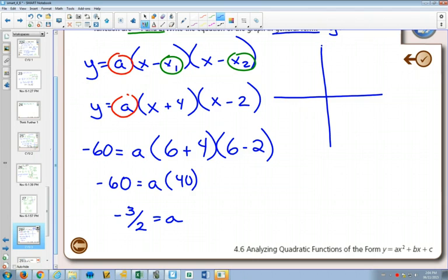So now we know that our equation in factored form - we figured out our a value is -3/2 - is y = -3/2(x + 4)(x - 2). The question asked us to write our final equation in general form, so we just need to multiply this out.